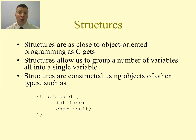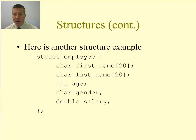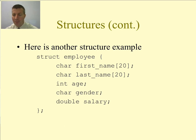I've created this structure called card, and inside of it — you see the curly braces there — I have an integer representing the face of the card and a character pointer, a string, representing the suit. Here is another example of a structure — this would be for an employee. An employee has a number of pieces of data associated with him or her, like a first name and last name represented by two character arrays, an integer representing age, a character representing the gender, and a double representing the salary.